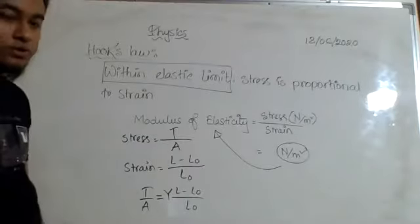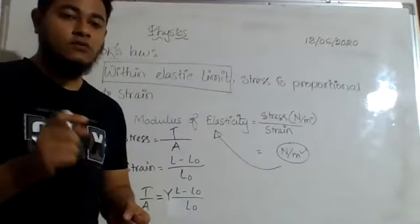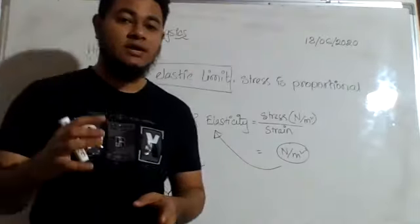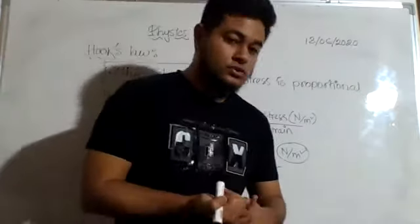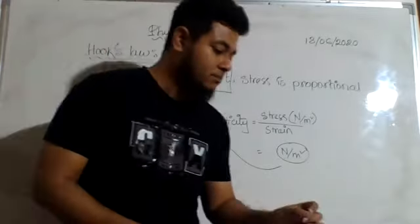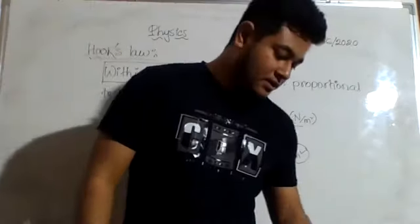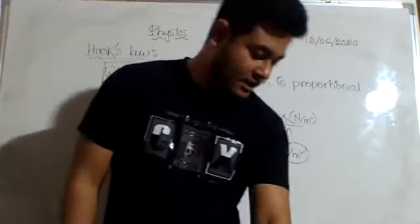Now if you want to replace this proportional sign by an equal sign, I must introduce a constant and that constant is Y, Young's modulus. This constant has different values for different objects. It is constant for a particular object. For example, for steel it has a constant value. It is listed in table 12.2. If you go to the table you get different values for different objects. There are a couple of examples you can go through.